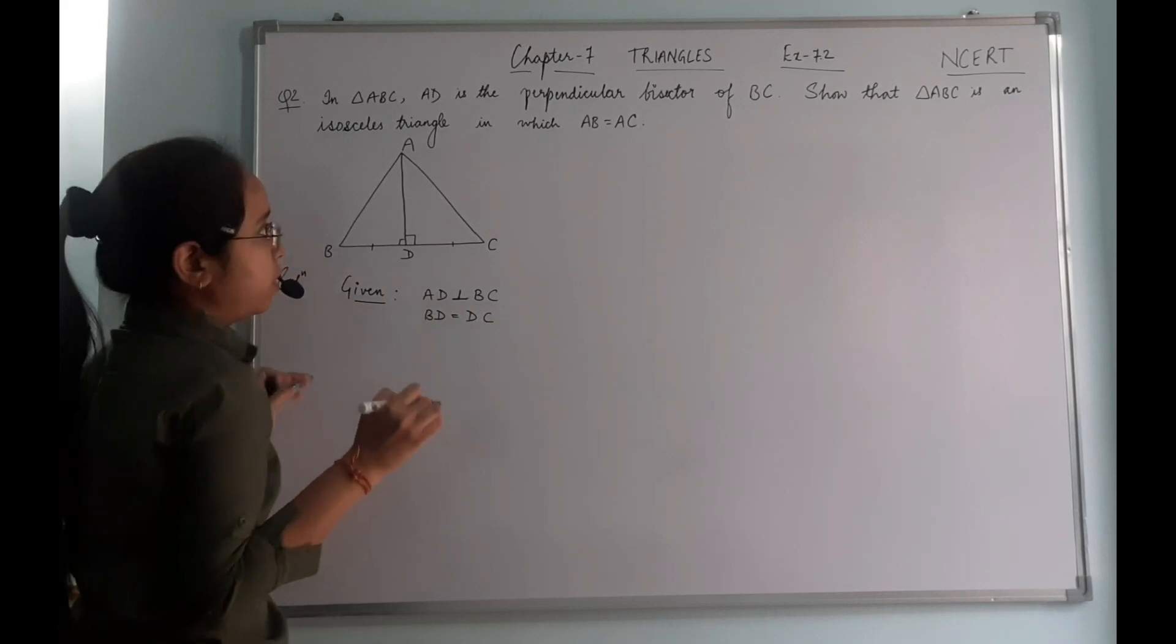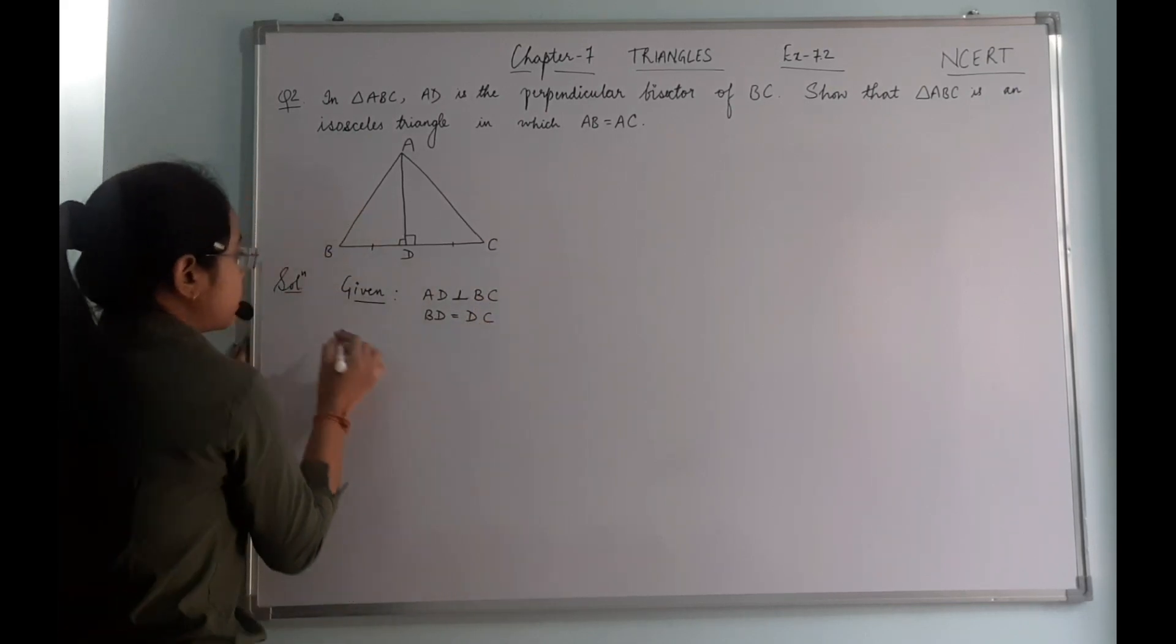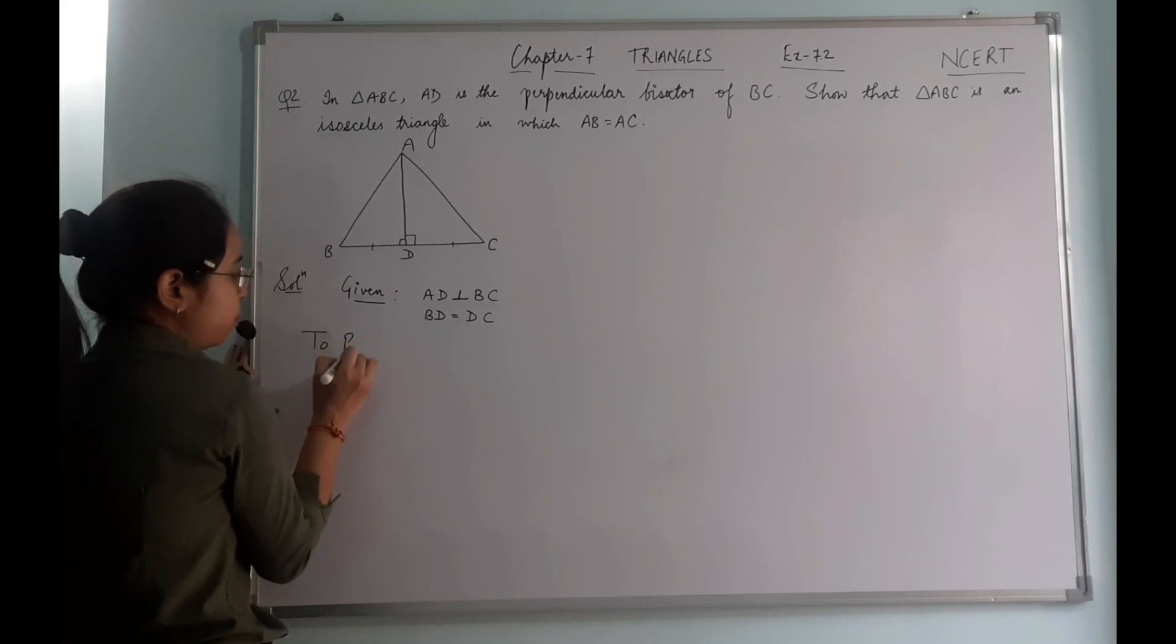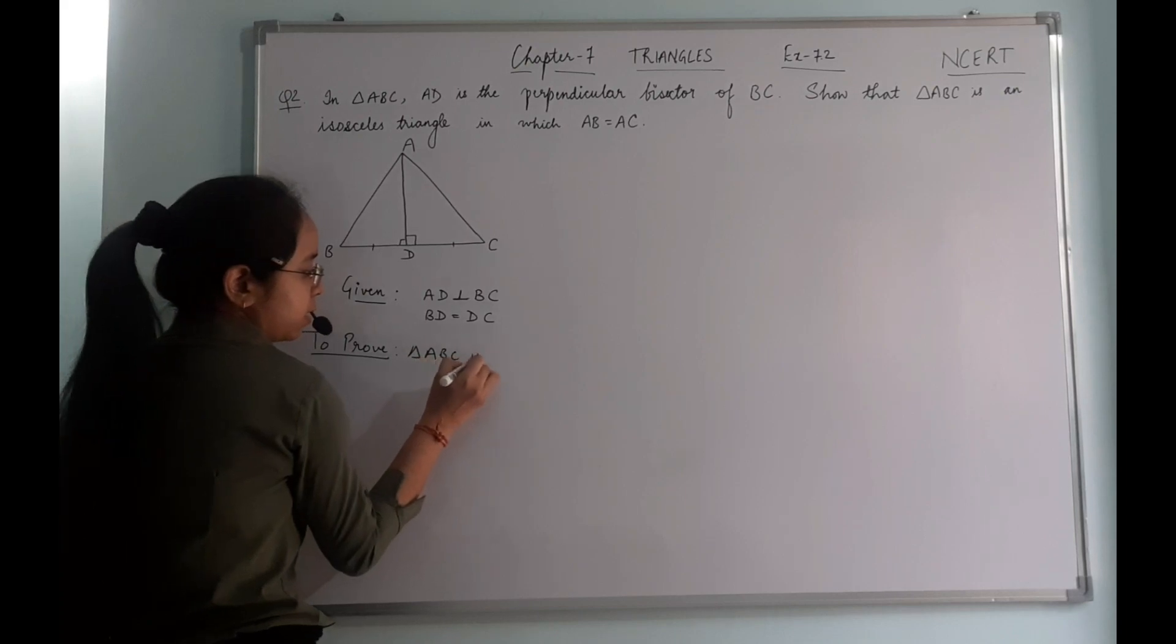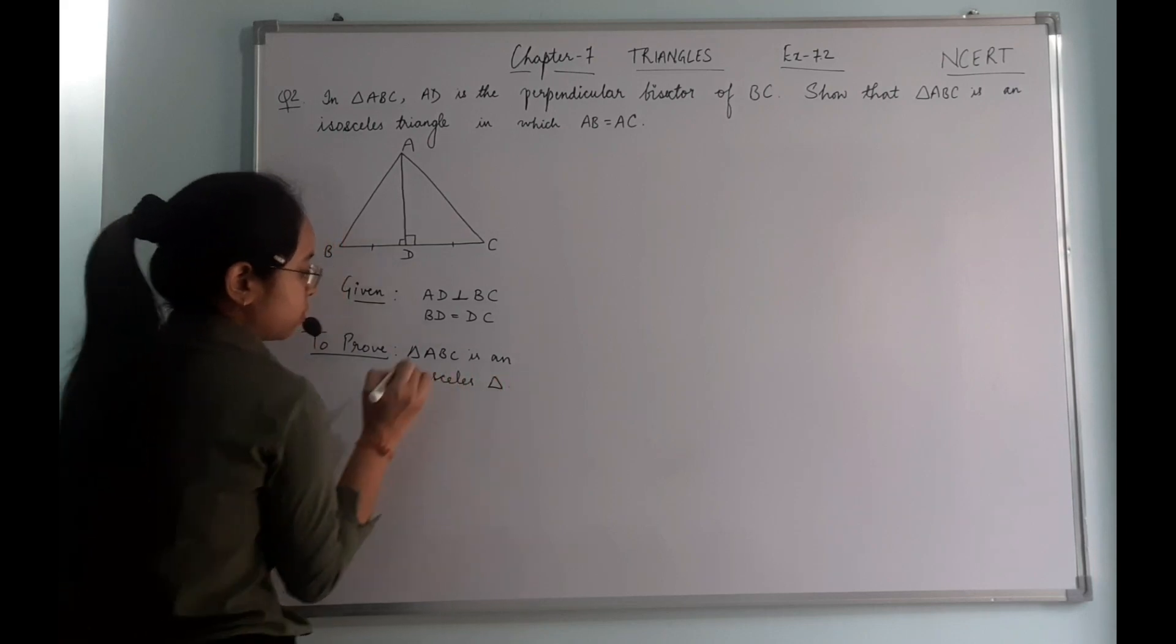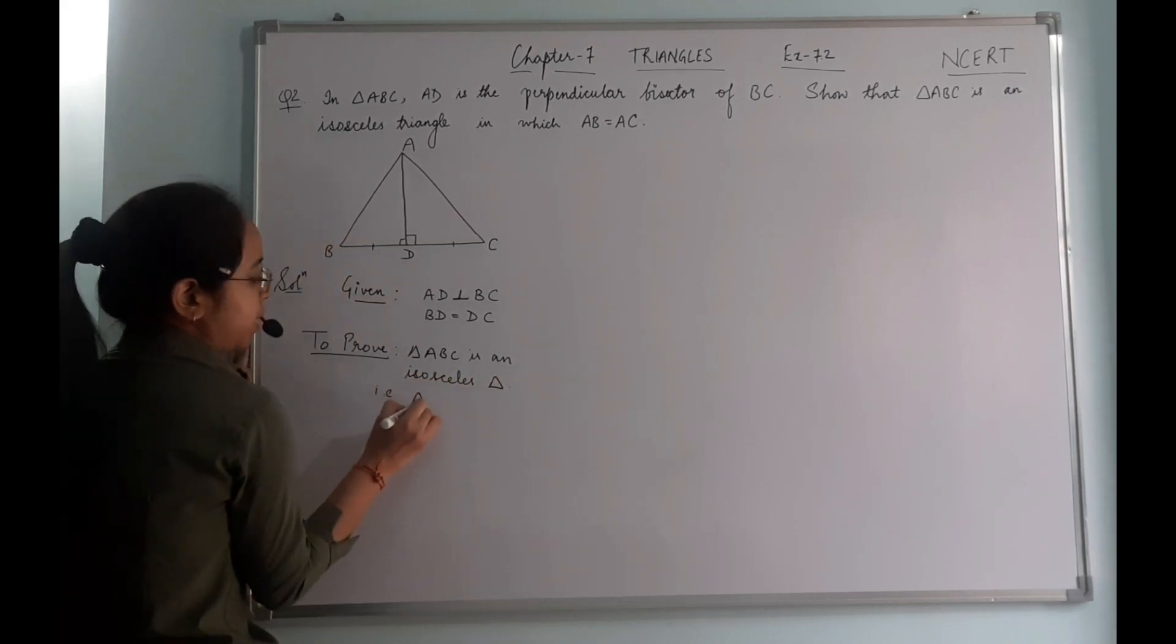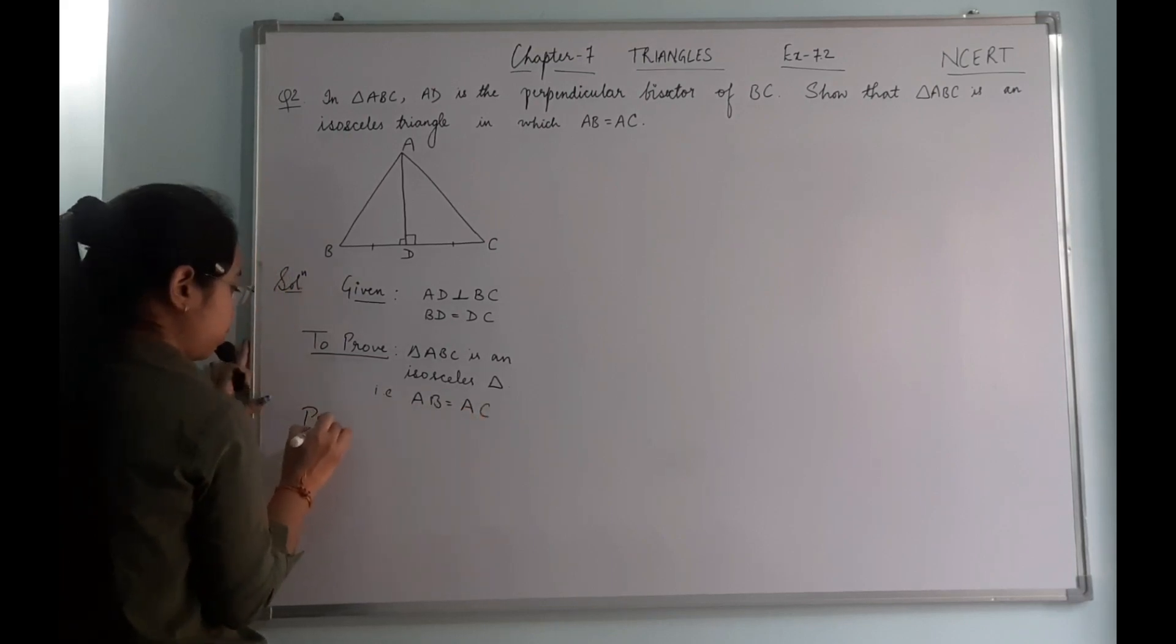So this is given to us and we have to show that triangle ABC is an isosceles triangle. To prove: triangle ABC is an isosceles triangle, that is AB equals AC. We have to prove this.